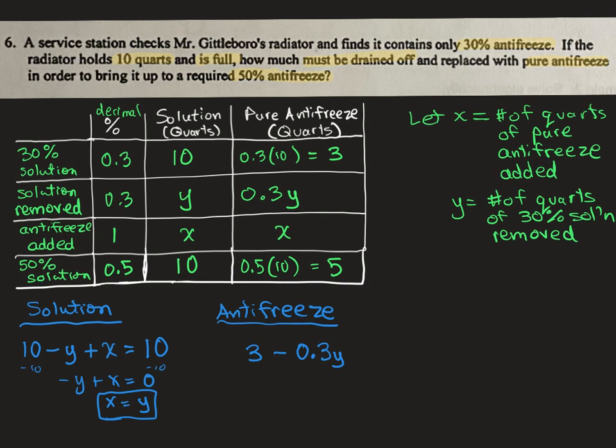Then we added some pure antifreeze, and that was x. And then that should equal the amount of antifreeze we had in our final solution, which was 5. And if we simplify that, so we'll subtract 3 from both sides, and that would give us negative 0.3y plus x equals 2.